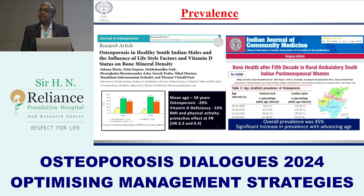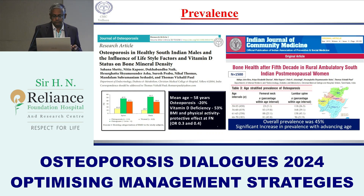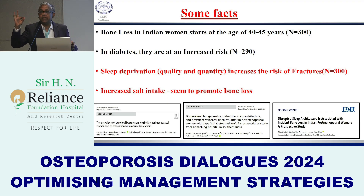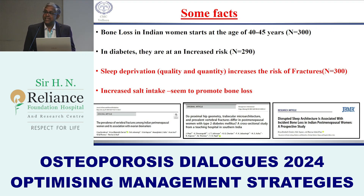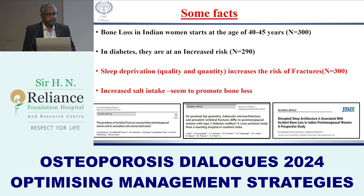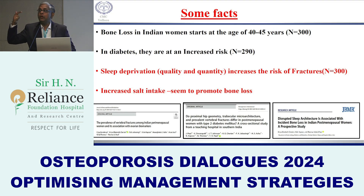From our center, 18 to 20% of men above 60 years have osteoporosis — so men are also not spared by aging. As Dr. Puneet mentioned, we published data showing that even regularly menstruating women aged 40 to 50 years can have asymptomatic vertebral fractures. Diabetes patients are at increased risk. A recent study we published in JBMR showed that women with less sleep, both in quality and quantity, are at increased risk of osteoporosis.